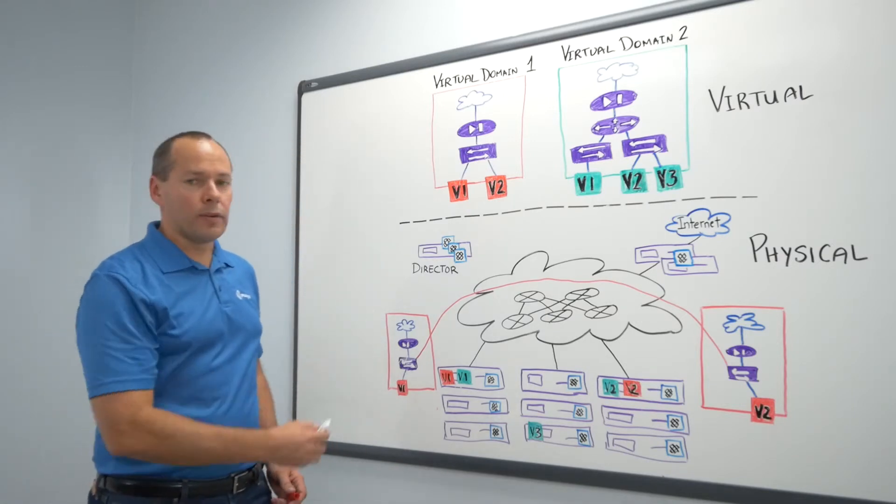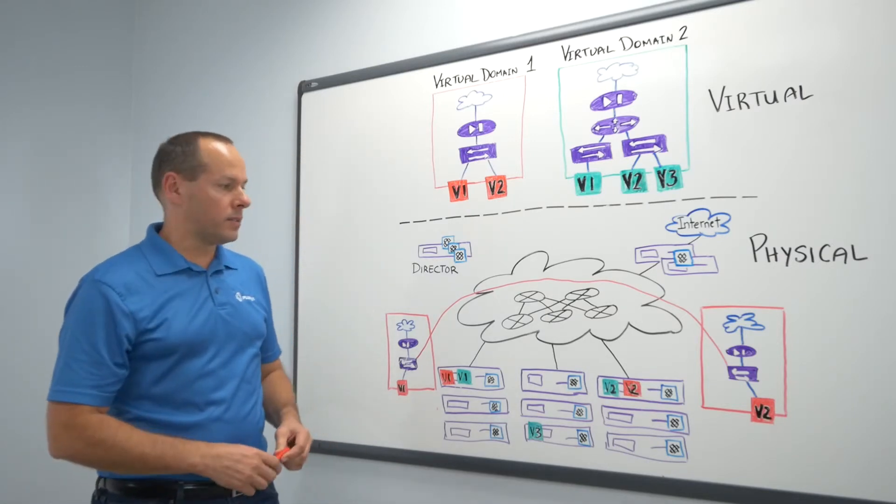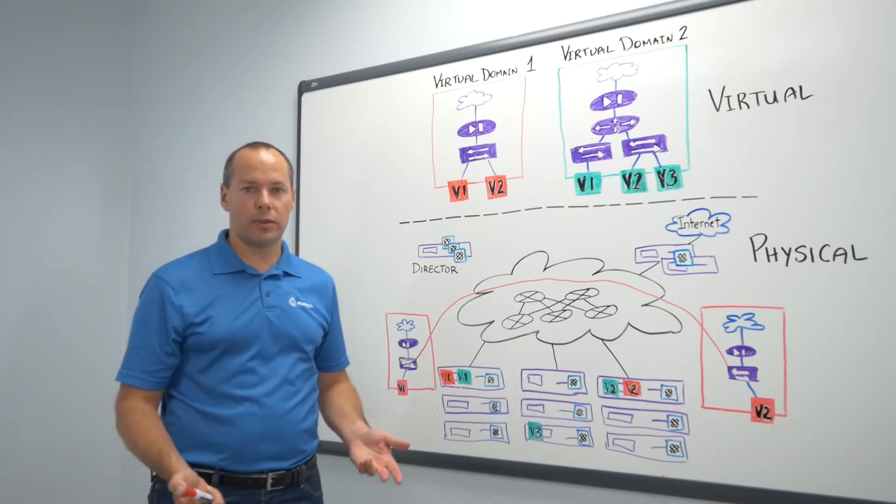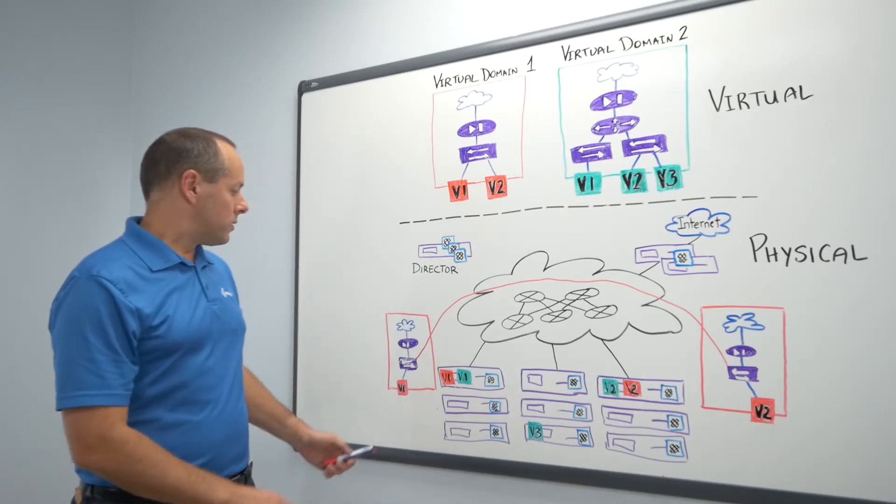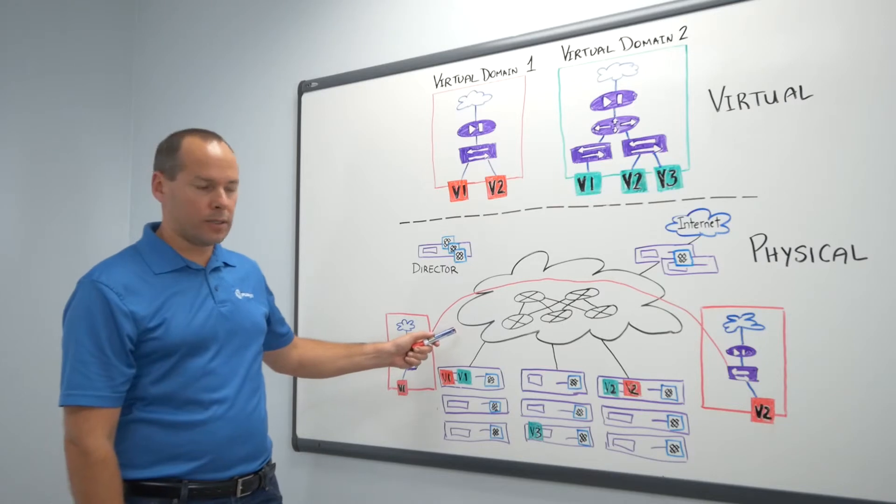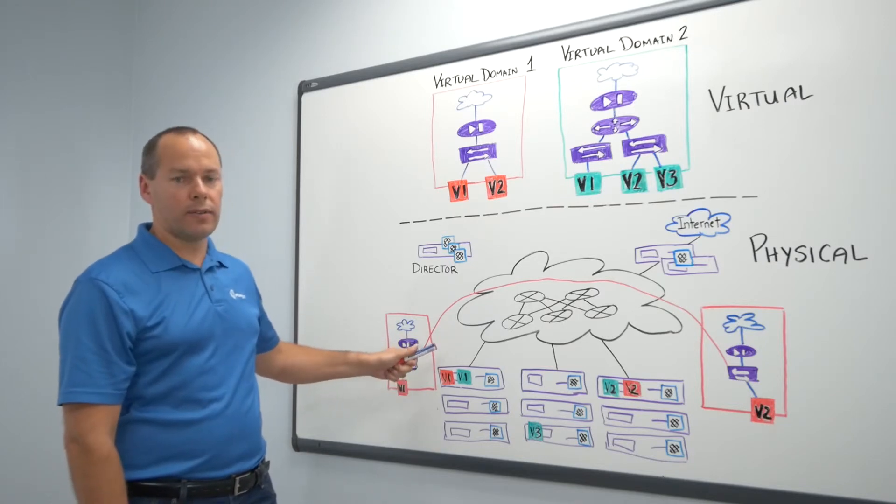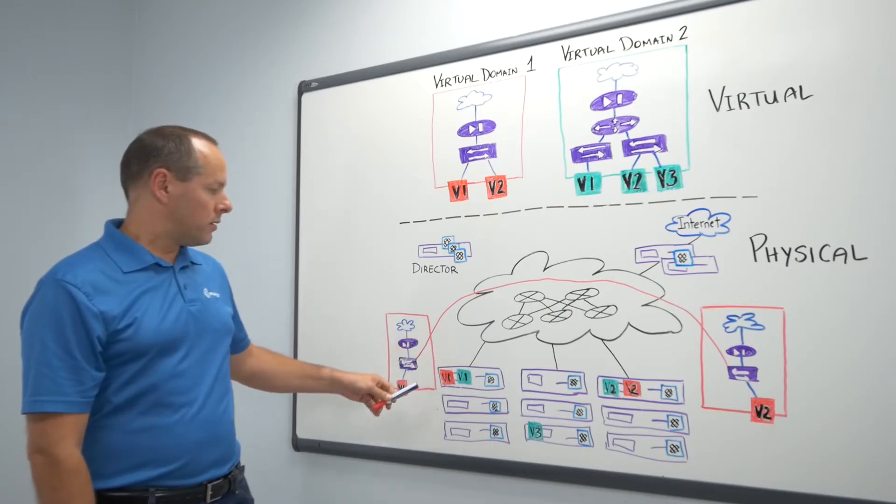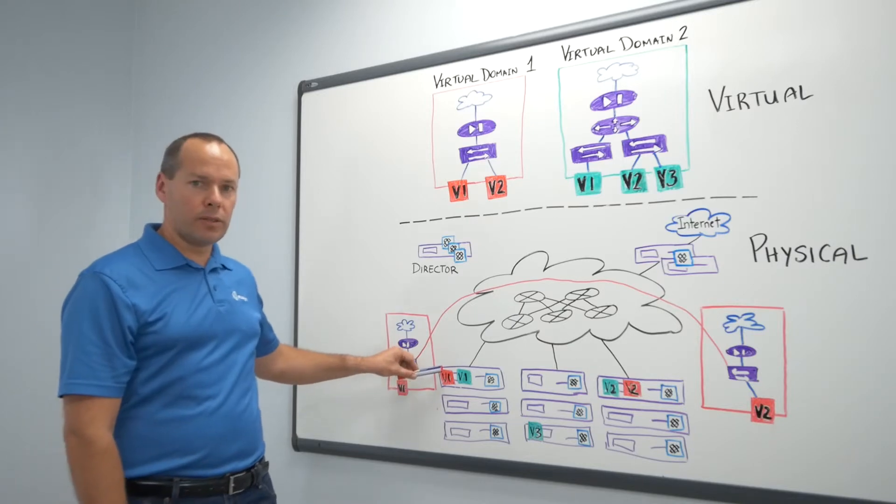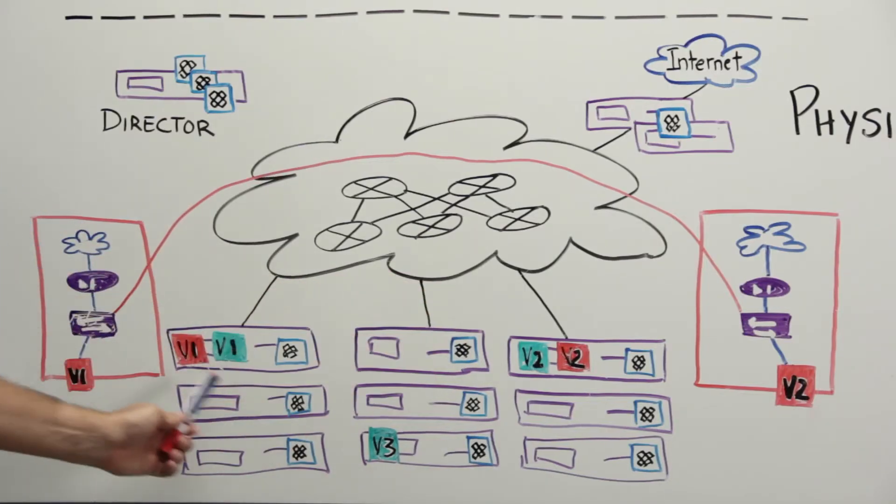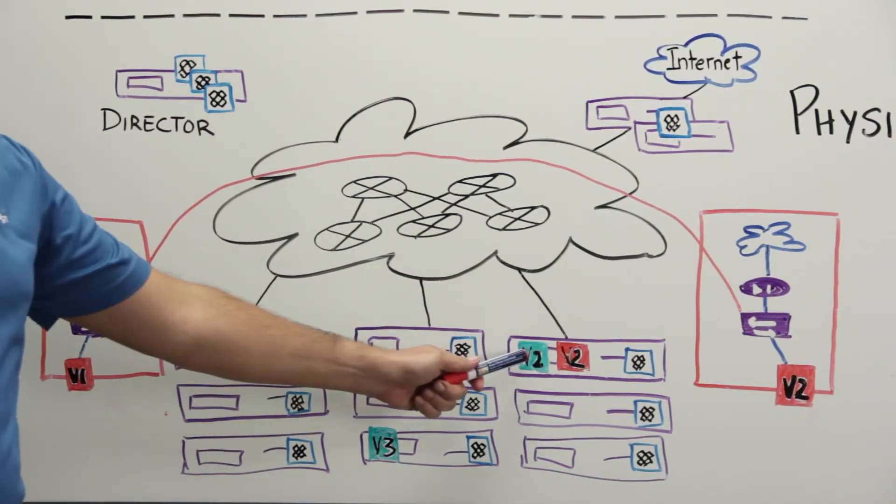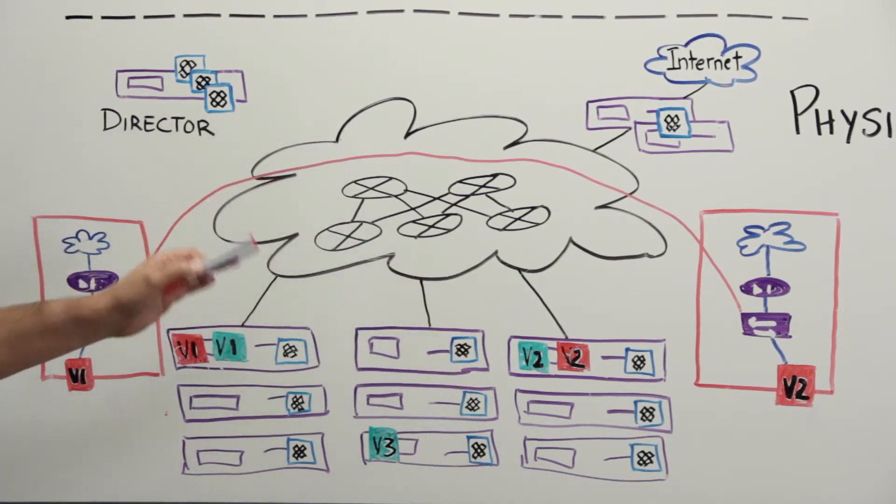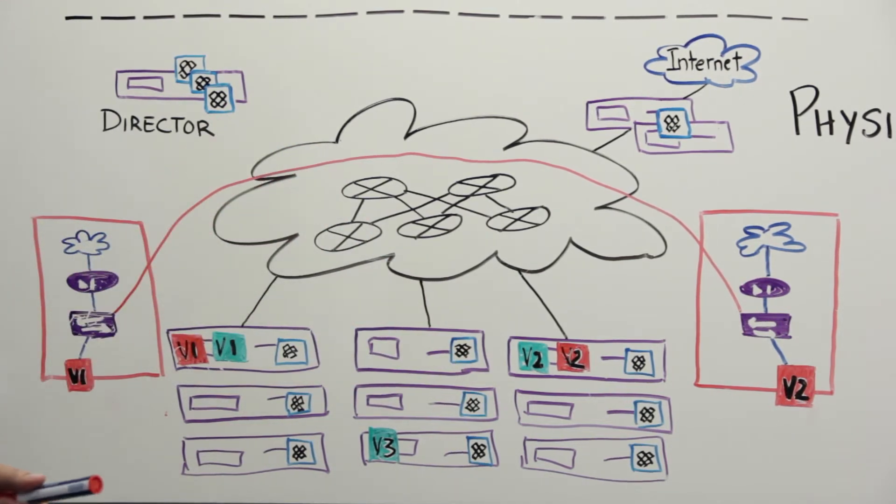The return traffic will follow the same path if necessary, for instance, responding to a ping. This distributed network function will continue communications between the two bridges as these two VMs communicate. Again, this is point to point from virtual machine 1 to virtual machine 2, from one hypervisor to another without any hairpinning or any service node supporting this communication.